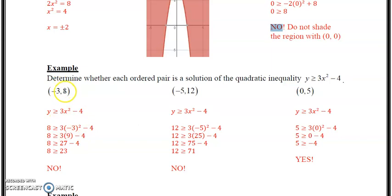So on the first one here, we have -3 as your x-value, 8 as your y-value. You plug in 8 for y and -3 for x. So we get -3 squared is 9, 9 times 3 is 27, 27 subtract 4 is 23. Is 8 greater than or equal to 23? No, it's not. So therefore, it's basically a test point is what you're doing essentially here.